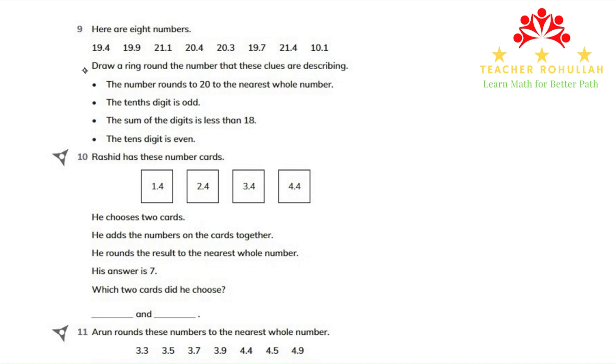Let's see what the text is saying over here. So it says, draw a ring around the number that these clues are describing. The first clue says the number rounds to 20 to the nearest whole number. So over here,